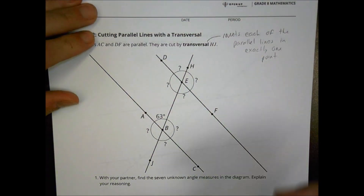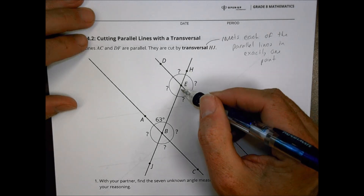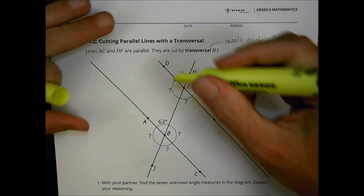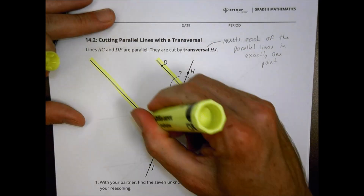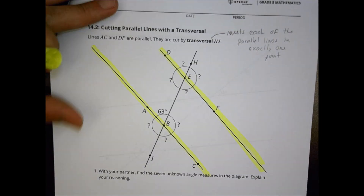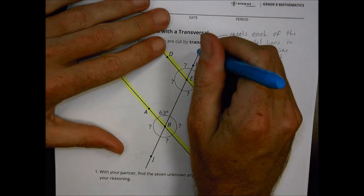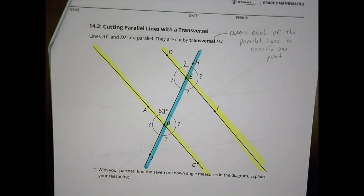Then we begin to talk about cutting parallel lines with what's called a transversal. A transversal means that this line meets each of the parallel lines in exactly one point. Our parallel lines here are DF, which is parallel to AC. The transversal is the line that cuts across at exactly one point. We're looking at the angle measurements formed when this happens.